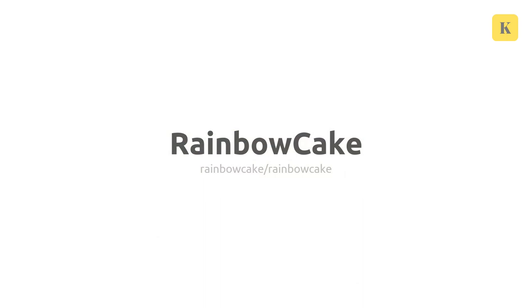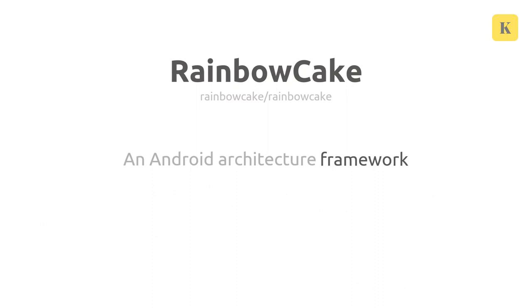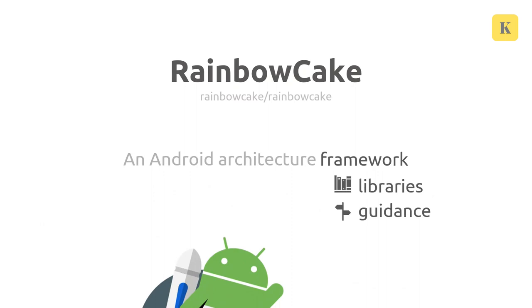Rainbow Cake is an Android architecture framework, slash library, slash concept, slash thingy. I sometimes have a hard time describing what it is exactly, but the point is that it's a framework most of the time. What I mean by a framework is that it's a set of libraries on one hand — code that you can reuse, include in your project as a dependency, and build upon. Plus it's also guidance to go along with this, both on how to use this code as well as on other parts of architecting your applications.